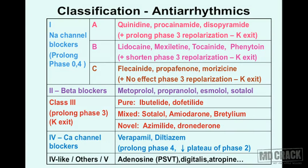Verapamil and diltiazem prolong phases 4 and 2. By blocking calcium entry during the plateau, the rise of the curve is reduced and the phase is altered. Finally, the last row in the table covers all other agents — some authors call these class 4-like or class 5. I simply call them 'other agents' as they have varied mechanisms of action.